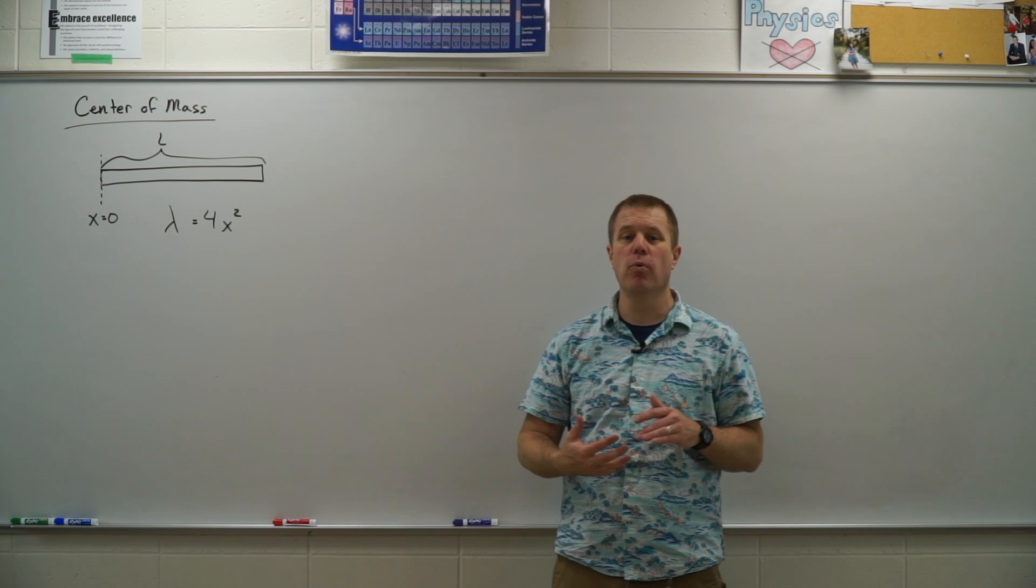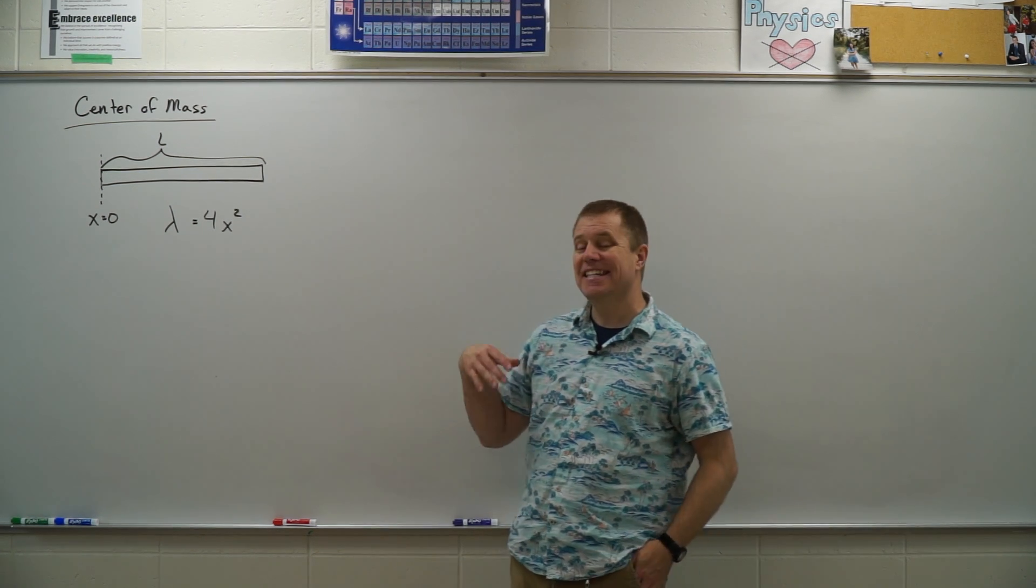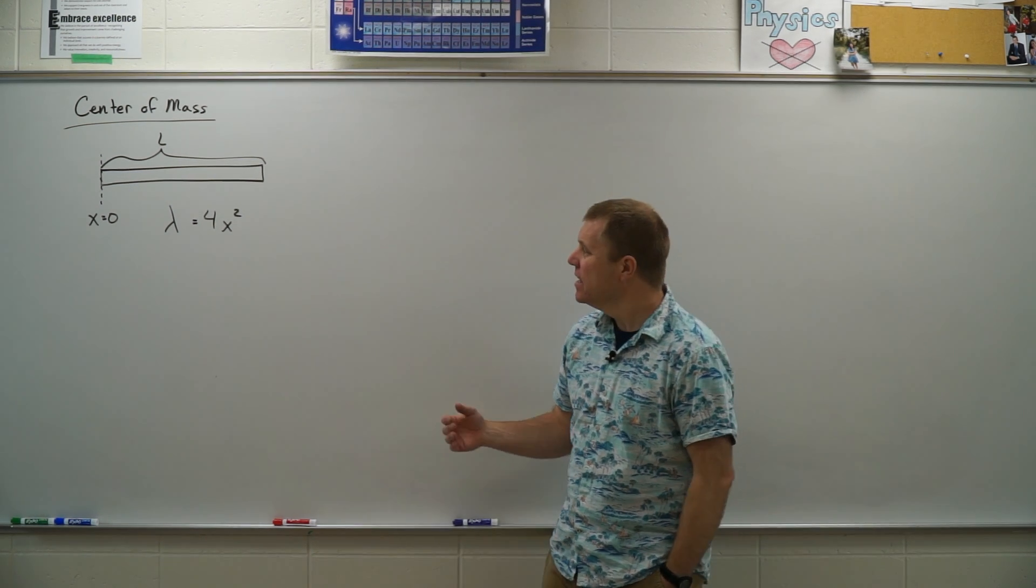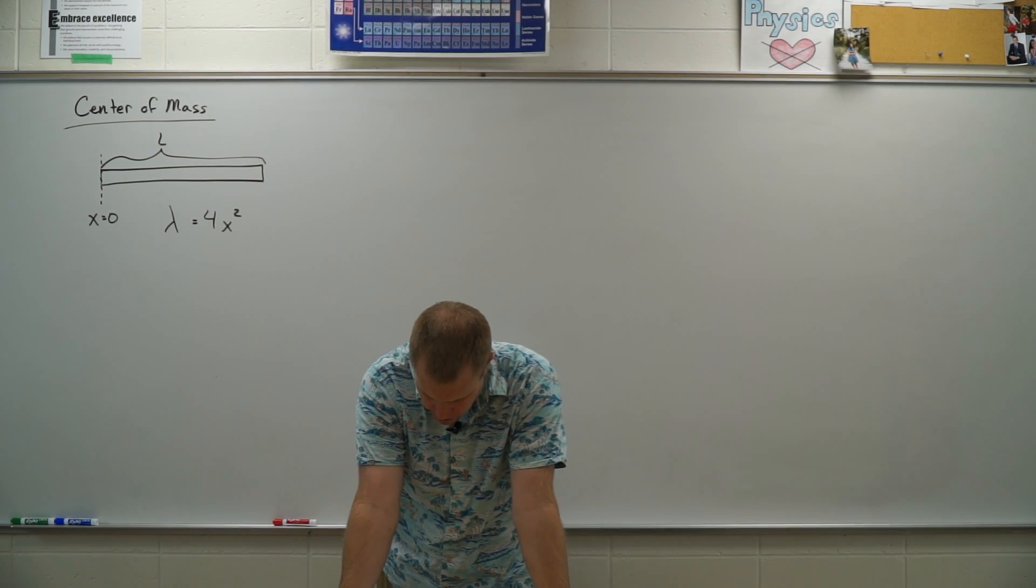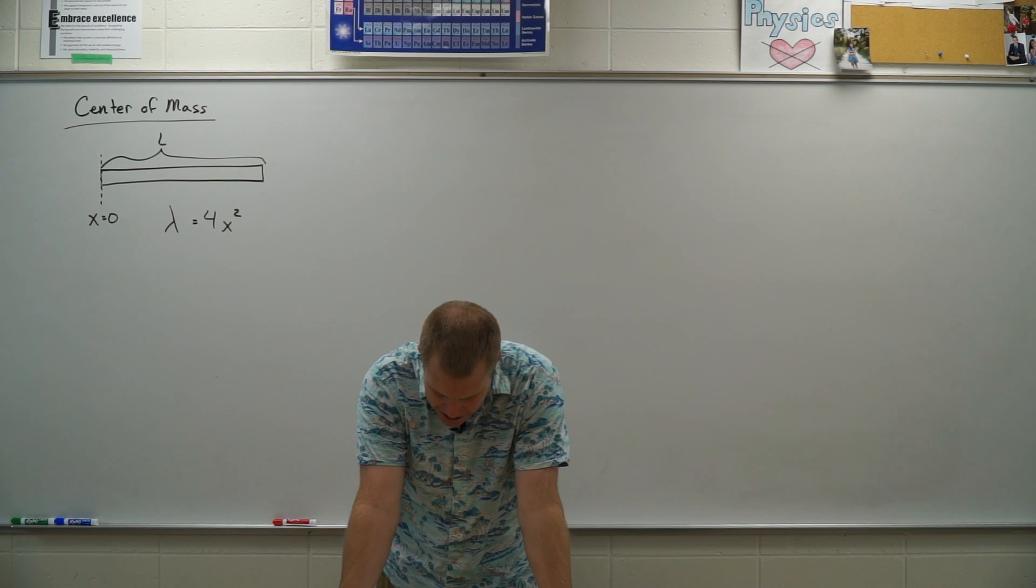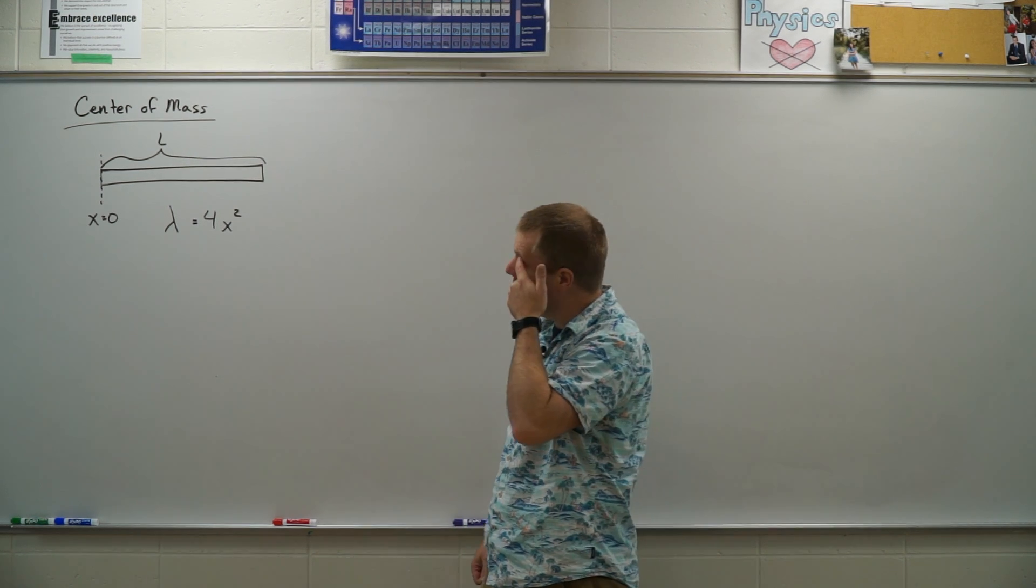Let's do a center of mass example with a rod that has a non-uniform density. The example we have here says, find the location of a center of mass of a rod with length L and a linear mass density of 4x squared.